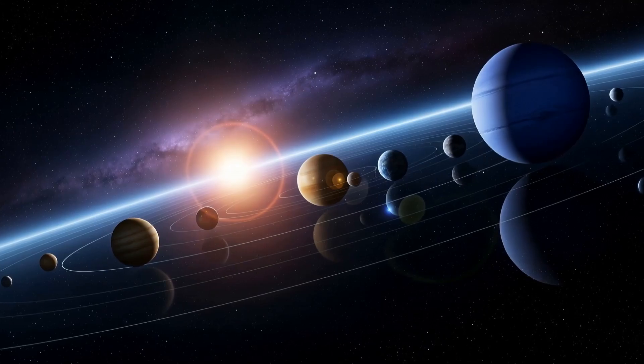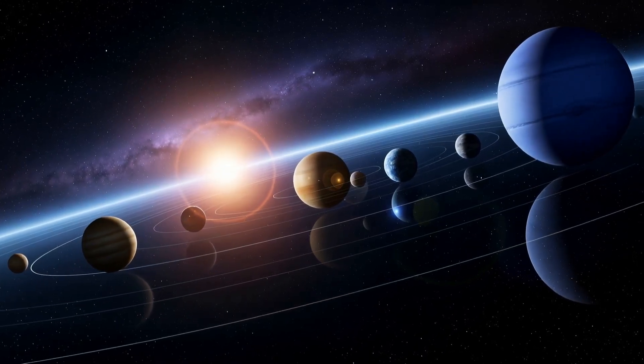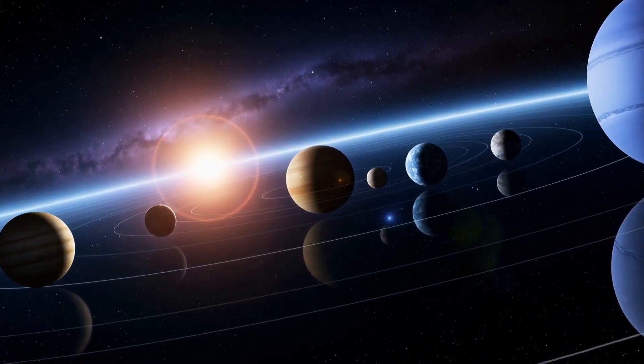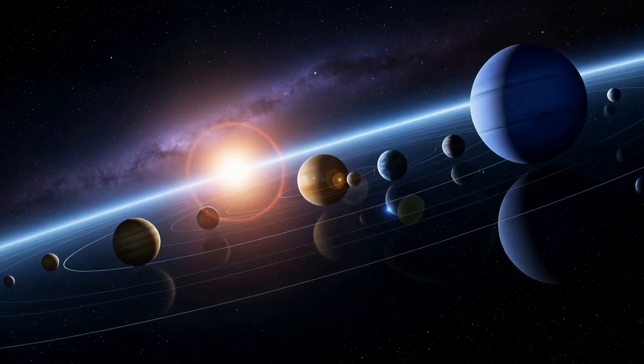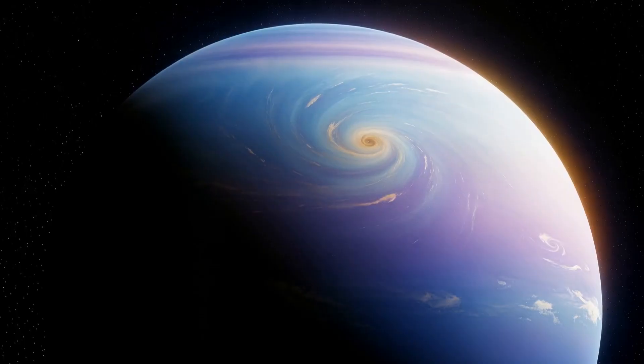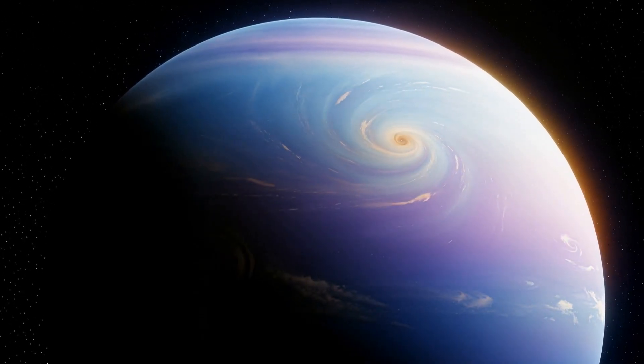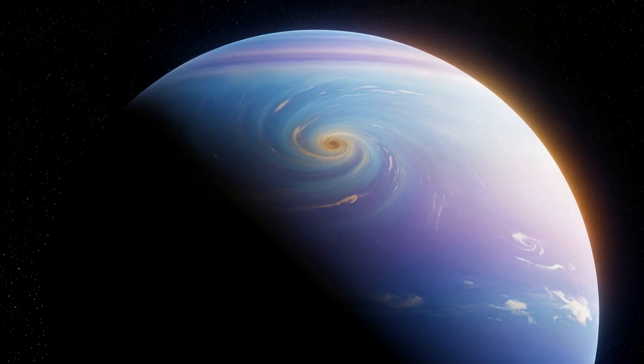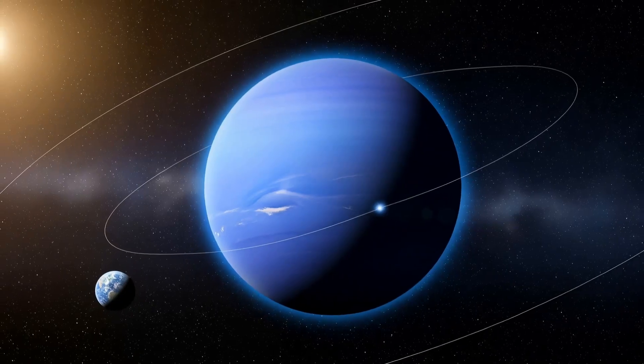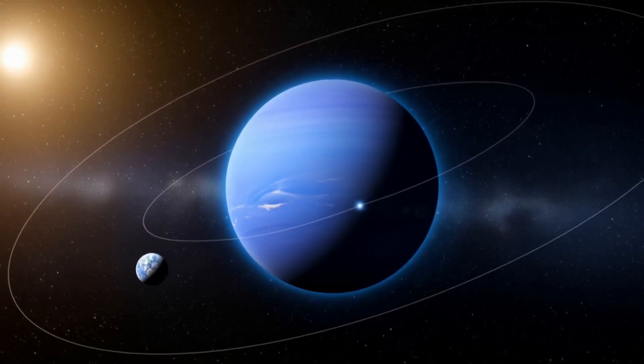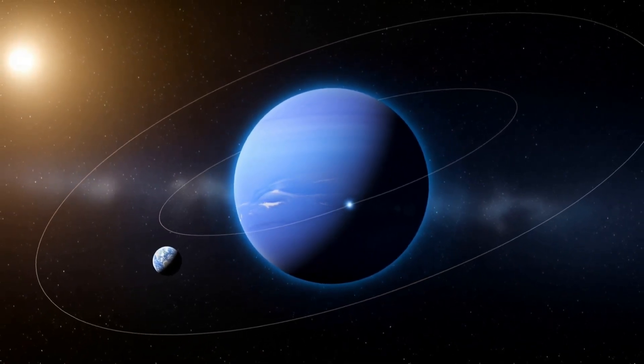Our story begins at the boundary of everything we thought we knew. Eight planets circling a single star in a cosmic rhythm studied for centuries. The final sentinel of this familiar system is Neptune, a beautiful, violent world of swirling blue storms and winds that shatter the sound barrier. It's a true giant packing the mass of 17 Earths, orbiting nearly 3 billion miles from the sun's warmth.